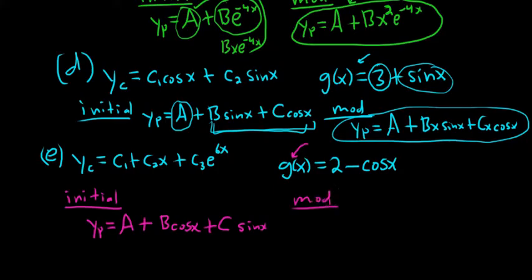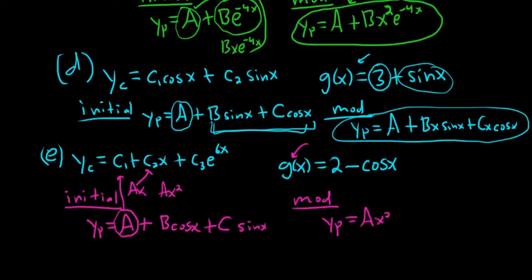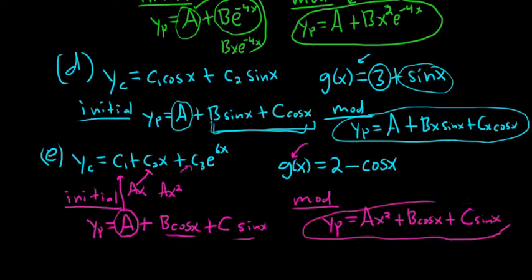Now for the modified, we look at Yp and the terms of Yc. Ooh — repetition: A repeats with C1, so we need Ax. But look — repetition again with C2 x, so we need Ax squared. So Yp equals Ax squared. The cosines and sines don't conflict, so they stay the same: plus B cosine x plus C sine x. That's the modified guess.